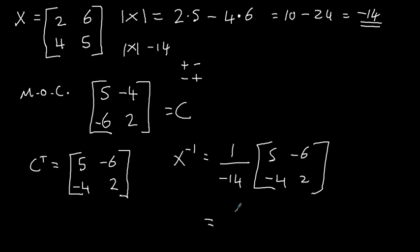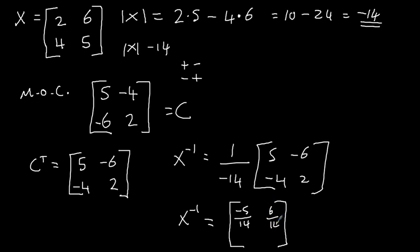The scalar multiplier one over minus fourteen is the same as minus one over fourteen. So the inverse X to the minus one works out as: minus five over fourteen; minus six over minus fourteen is just six over fourteen because the minus ones cancel; then four over fourteen; and finally minus two over fourteen. That is the inverse of X.